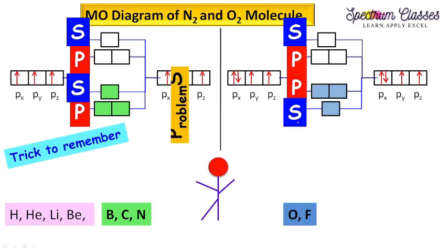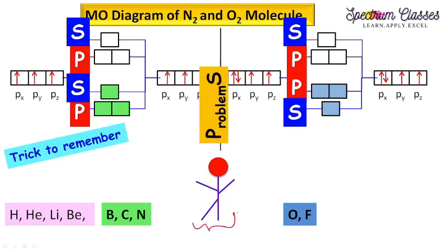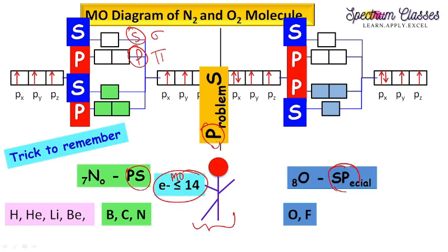Just to memorize this, suppose we are having a person like you and me. If problems come, this P stands for the upper part. Here P or pi and this S, S stands for sigma, P stands for pi. If electrons in a molecule are less than equal to 14 as in case of nitrogen.